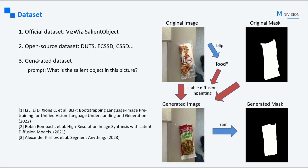I'd like to mainly talk about our method for creating the synthetic data. As displayed in the figure on the right, we initially selected an image from the training dataset, then fed it into the BLIP model together with the prompt 'What is the salient object in this picture?' This process enables us to predict the salient object and acquire its corresponding caption — in this example, the output was 'food.' We then took the original image, the corresponding mask, and the caption from BLIP and fed them into the stable diffusion model, using its inpainting feature to create synthetic image data. Finally, we passed the generated image through the SAM model to obtain the salient object mask. This method greatly expanded our training data by generating additional examples.